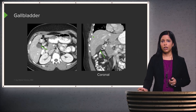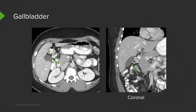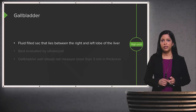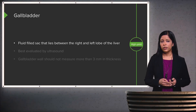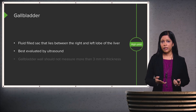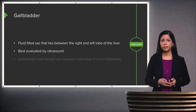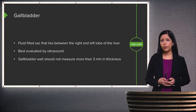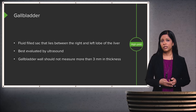The gallbladder is embedded underneath the liver but is well seen on CT as a fluid-filled sac. It's located between the right and left lobes of the liver and is best evaluated by ultrasound. If an abnormality is suspected, abdominal ultrasound is the first-line imaging modality. The gallbladder wall should not measure more than about 3 millimeters in thickness, which is best assessed on ultrasound but may be suspected on CT.